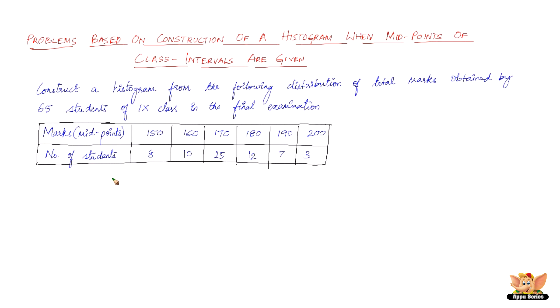The first step here is the ascertainment of lower and upper class limits by using the midpoint. Since the difference between the second and first midpoint, that is 160 and 150, is 10, h equals 10.